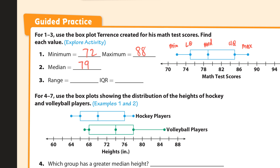The range is the biggest number minus the smallest, so the max minus the min. That would be 88 minus 72, and that is 16. The interquartile range — that's IQR, interquartile range — you have to take the quartiles and subtract them.